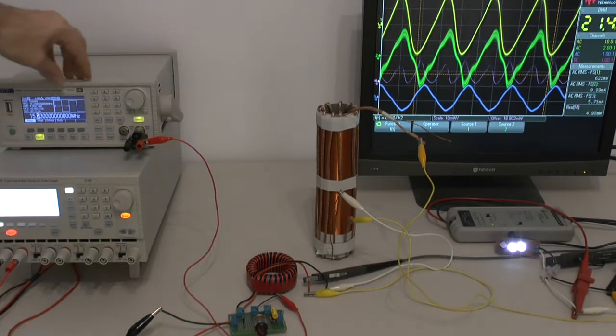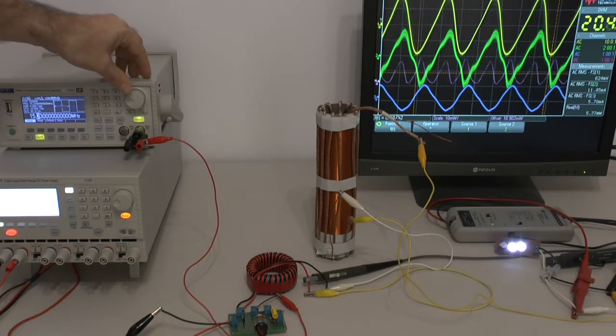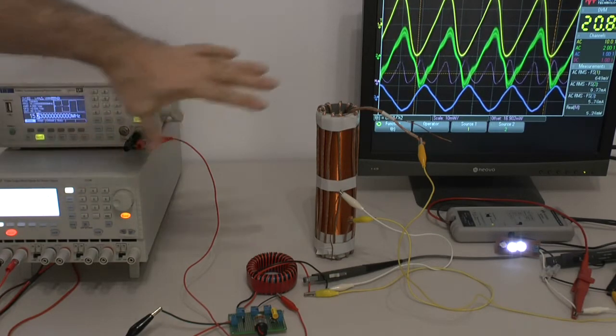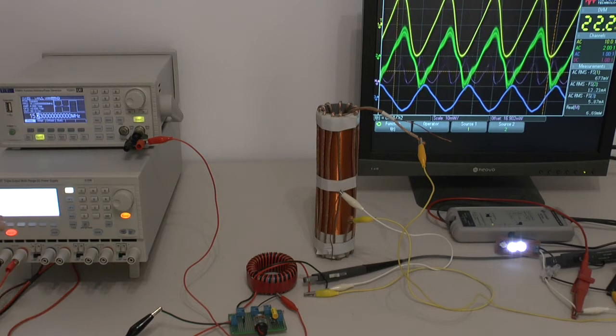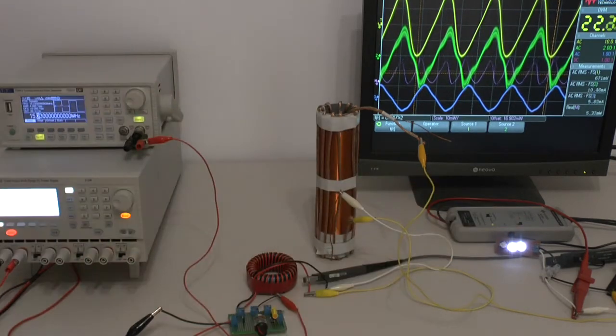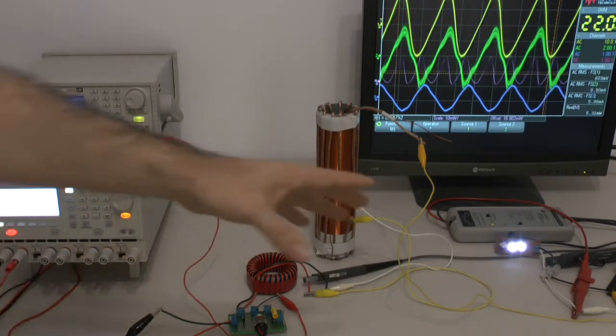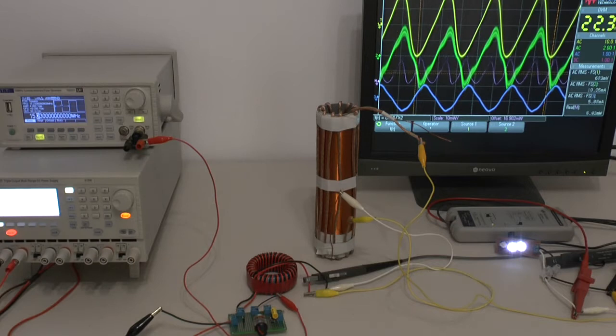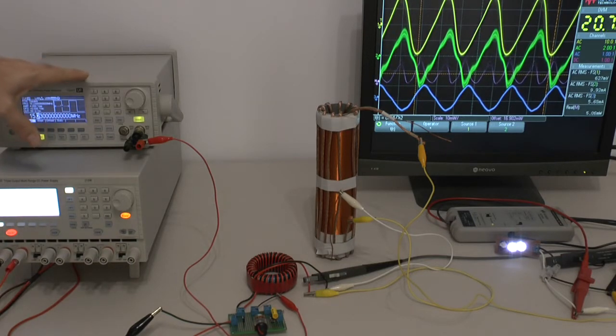The interference of the signal generator is changing the way the DC is flowing through the system. Because there is no direct connection to the load, we cannot draw the amount of power the load would require to illuminate. The signal is interfered via the signal generator.